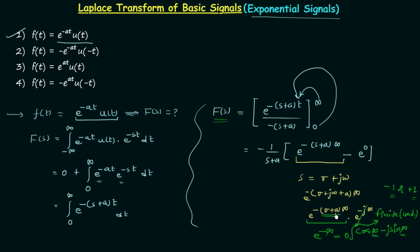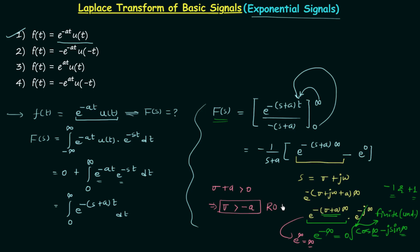If (σ+a) is negative, we will have e^(-(-finite)·∞) = e^(+∞), which is infinity. Infinity multiplied by the finite value gives infinity, so the Laplace transform will not exist. Therefore there is a condition on (σ+a): it should be positive, meaning greater than 0. From this we get σ must be greater than minus a, and this is our region of convergence.